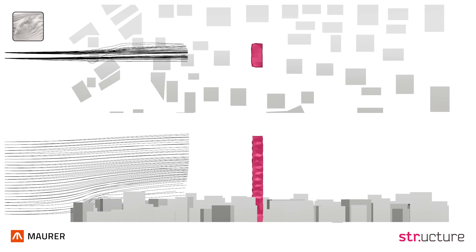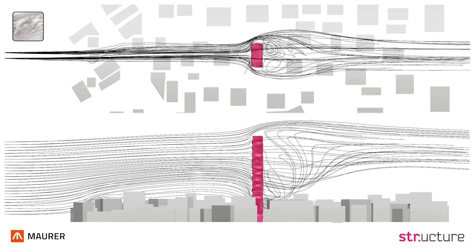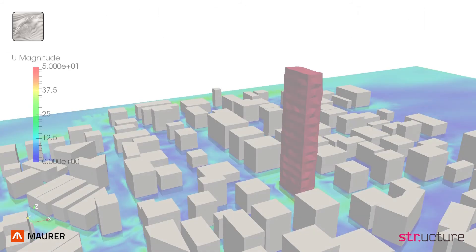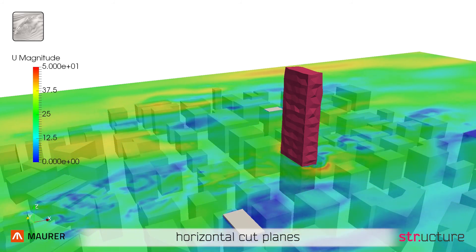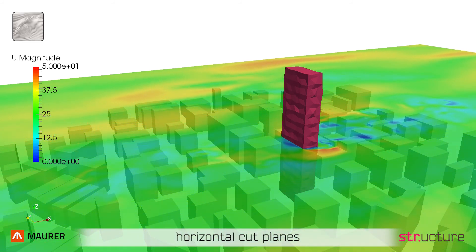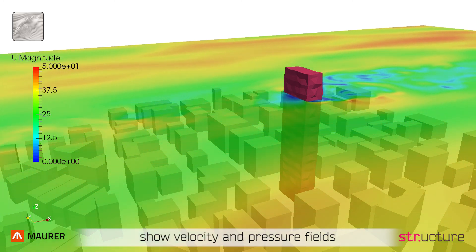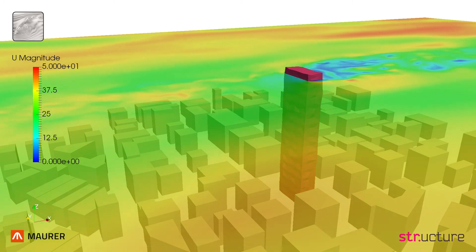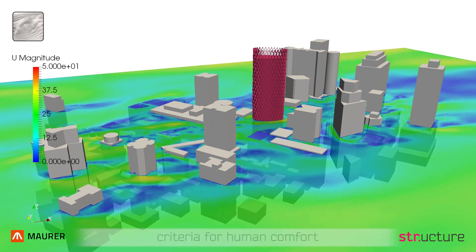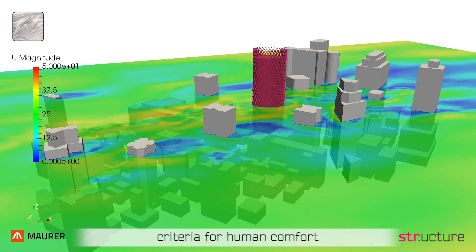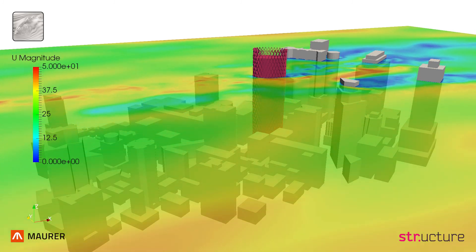Obstacles in the path of wind convert the kinetic energy into pressure, thereby creating wind loads. Horizontal cut planes are created to visualize velocity contours at varying heights. Surfaces showing velocity and pressure fields give insight into the turbulent vortex structures occurring downstream of buildings. Pedestrian level wind conditions can be investigated and compared to criteria for human comfort.